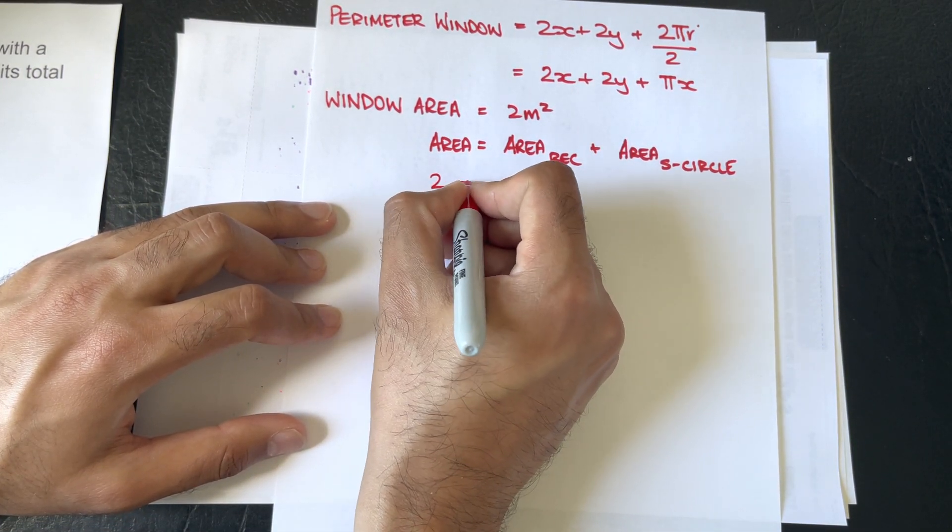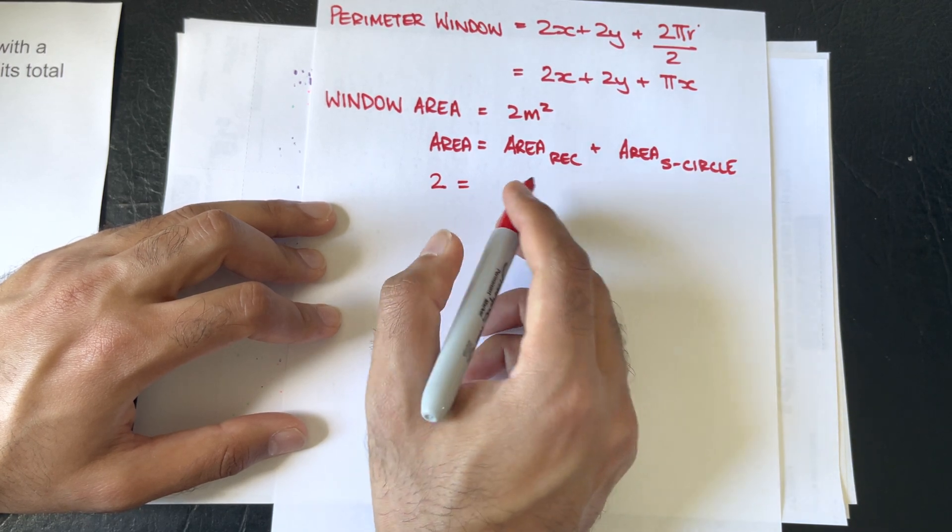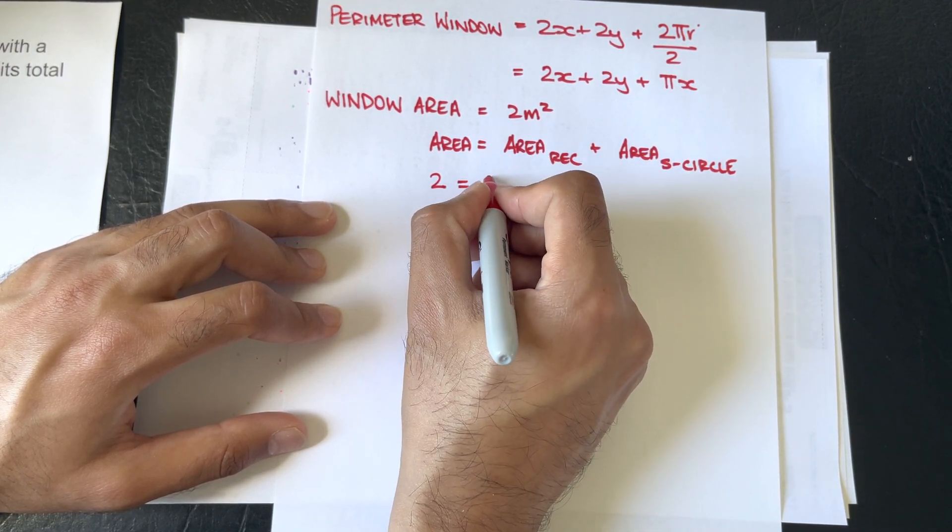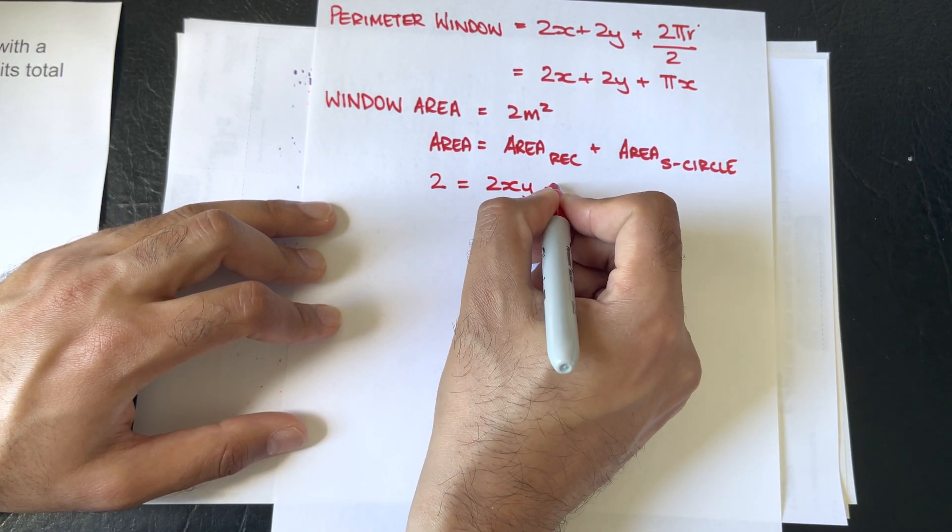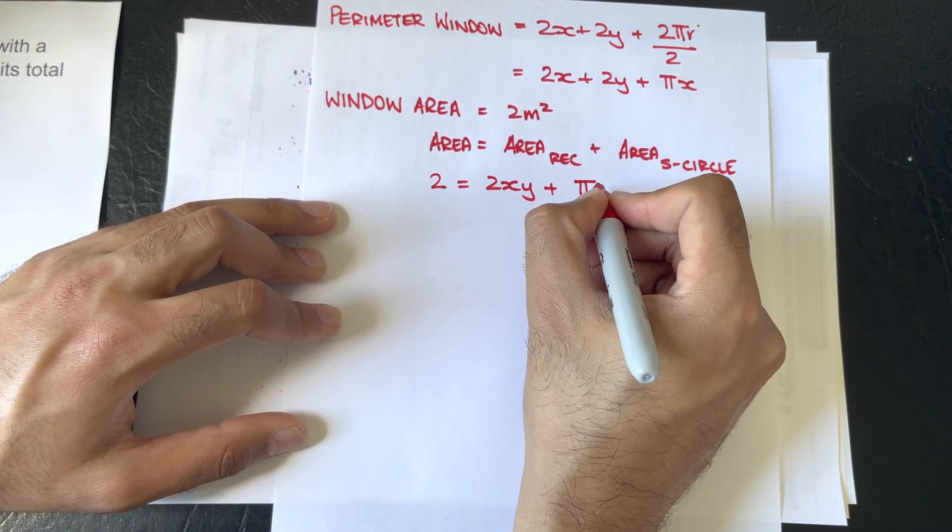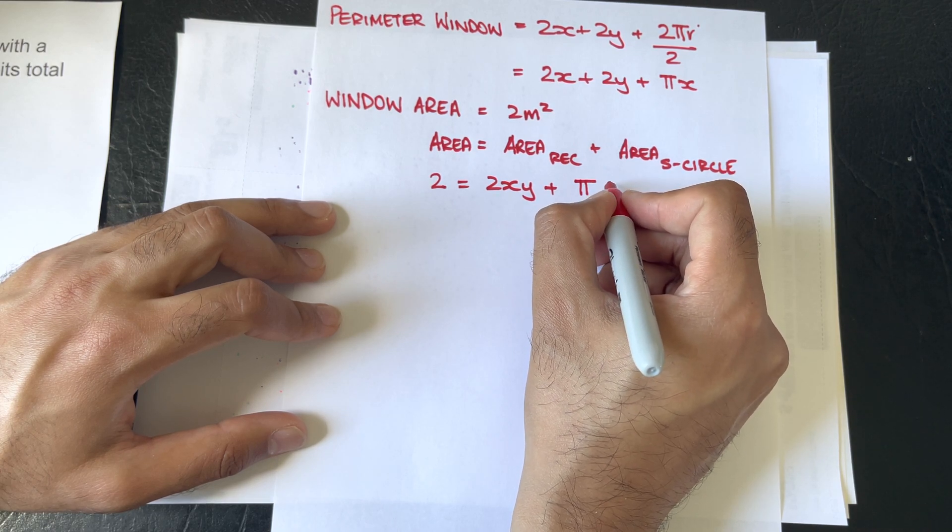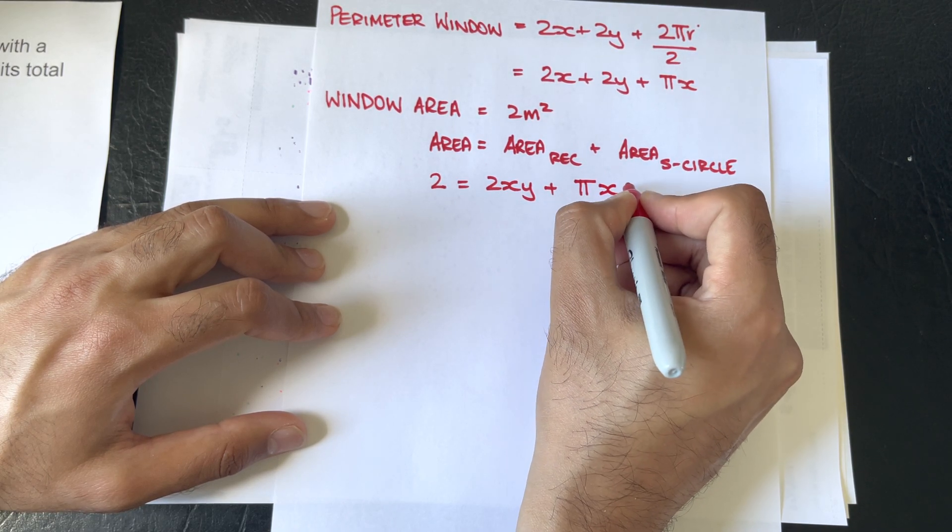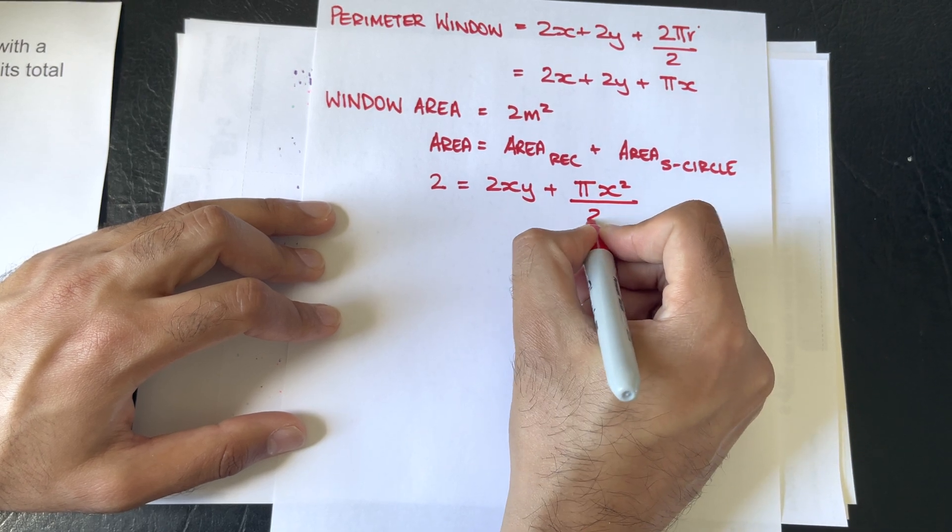Substituting in the values, we'll get length by width for the rectangle would be 2xy, and the area of the semicircle is πr squared, or in our case, is x squared, all over 2.